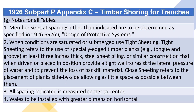G. Notes for All Tables. 1. Member sizes at spacings other than indicated are to be determined as specified in 1926.652(C), design of protective systems. 2. Close sheeting refers to the use of specially edged timber planks (e.g., tongue and groove), at least 3 inches thick, steel sheet piling, or similar construction that, when driven or placed in position, provides a tight wall to resist the lateral pressure of water and to prevent the loss of backfill material. Close sheeting also refers to the placement of planks side by side, allowing as little space as possible between them.